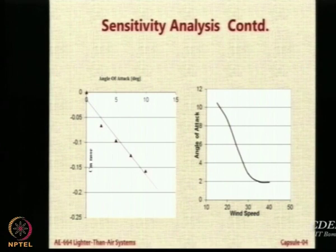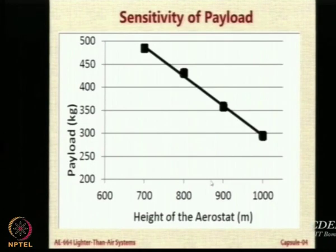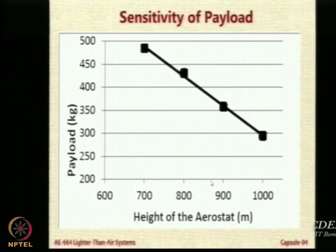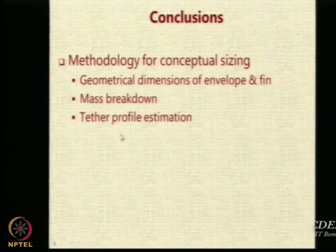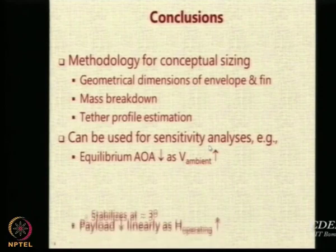Some further study showed the same methodology trimming the aerostat at around 2 degrees angle of attack. This is wind speed versus angle of attack, and this is how payload changes — it changes linearly. The payload drops linearly with altitude, which is something known to us. At a height of 100 meters payload is around 480 kg; at 1000 meters it is just 300 kg. In conclusion, we have a methodology for sizing of the aerostat that can be used for carrying out sensitivity analysis.